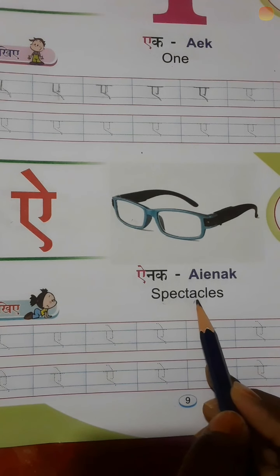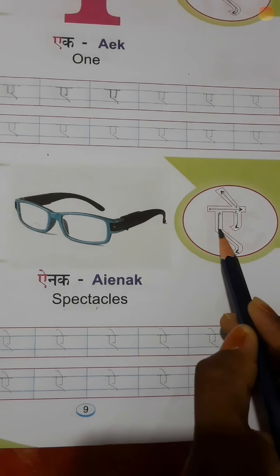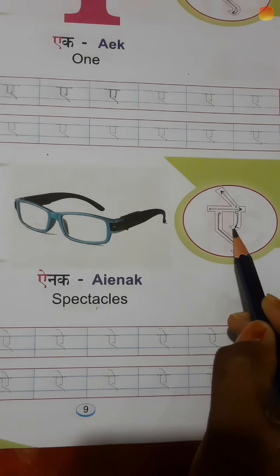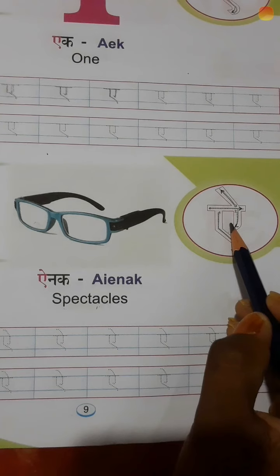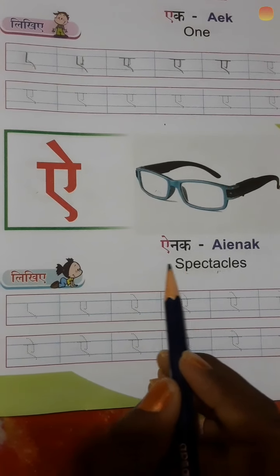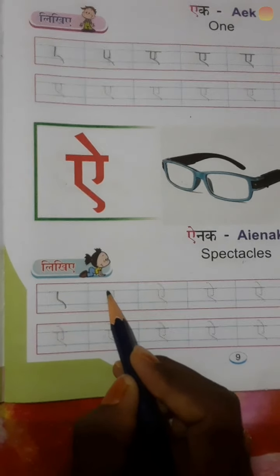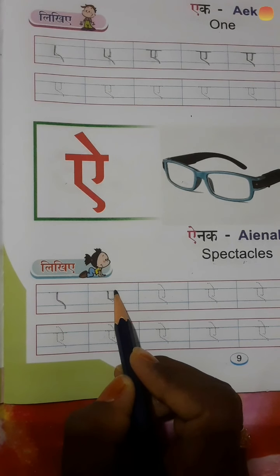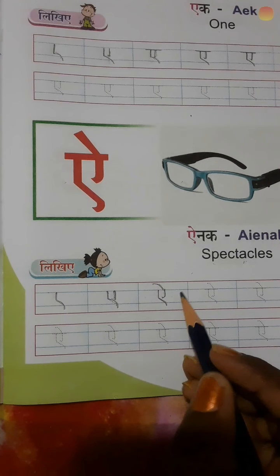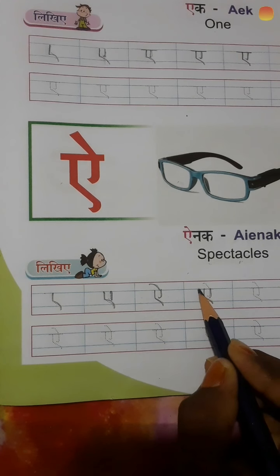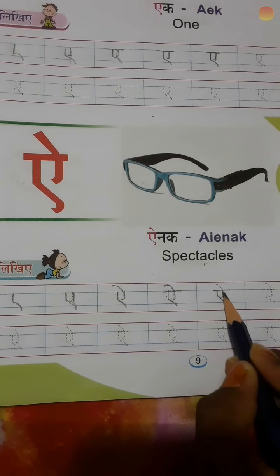A writing steps — Aynat, Spectacles. First step, second step, third step, and fourth step — total four steps. First, second, third, fourth.